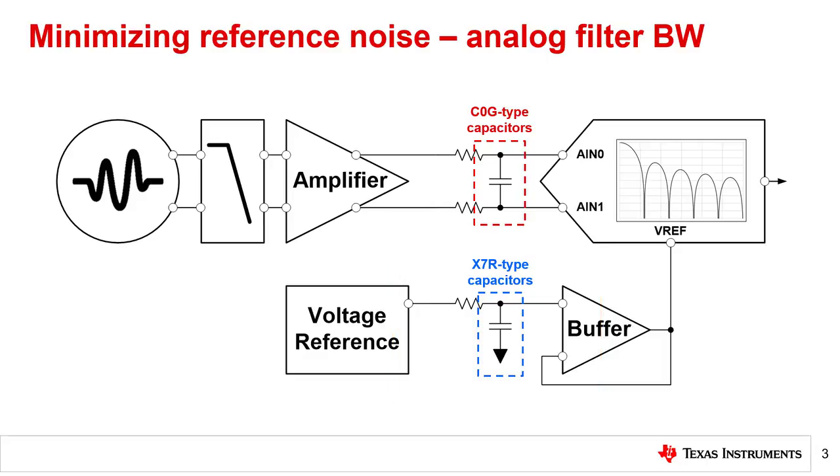Therefore, reference filters may employ higher capacitance, X7R type capacitors, compared to the recommended C0G type capacitors for input signal path filters.